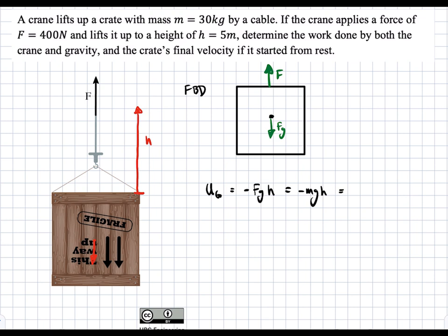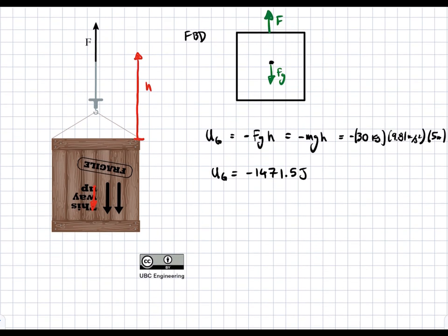If we plug in some numbers, we get negative 30 kilograms — that's the mass — times G, which is 9.81 meters per second squared, times H, which is 5 meters. We get that Ug is going to be equal to negative 1471.5 joules. This is the work done by the gravitational force.